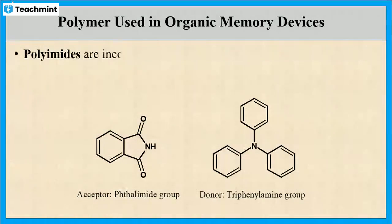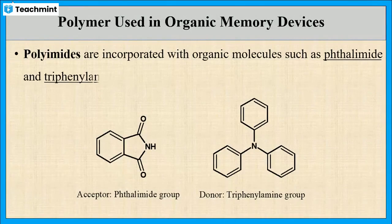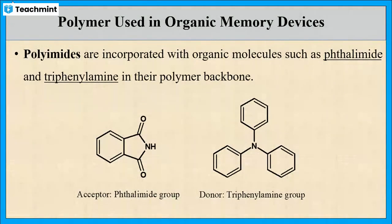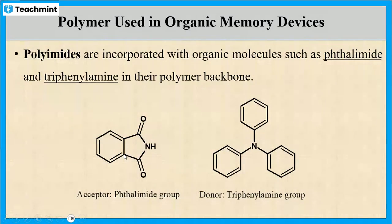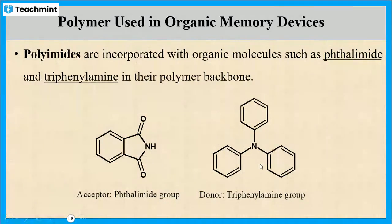Polyimides are incorporated with organic molecules such as thalimide and triphenylamine in their backbone. Here, the thalimide unit acts as electron acceptor whereas the triphenylamine unit acts as electron donor.